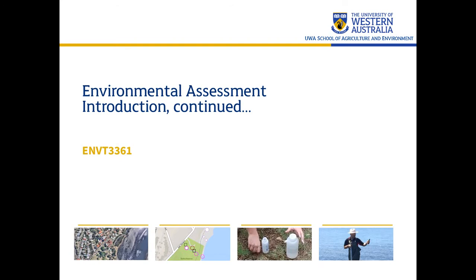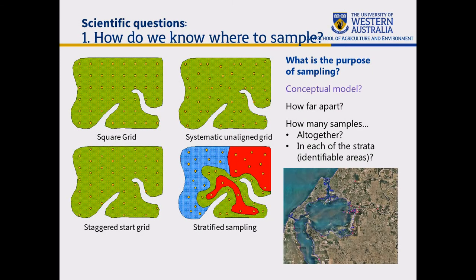We're going to pick up where we left off yesterday and the remainder of the lecture will be just in video format. We're going to deal with some of the scientific issues that we cover in environmental assessment. One of the first is designing sampling — how do we know where and how to do it. That's something we'll learn in the field and partly in the practice exercises, but we need some information beforehand, and often that information is pretty minimal.